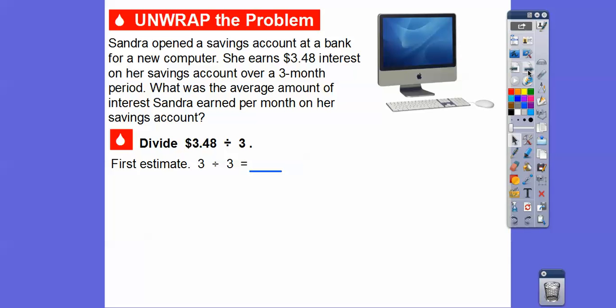It's always good to estimate, so we know when we get our answer whether it's close to our estimate. $3.48 is close to three, and three divided by three is one. So as long as we get a number that's close to one, we should be good.